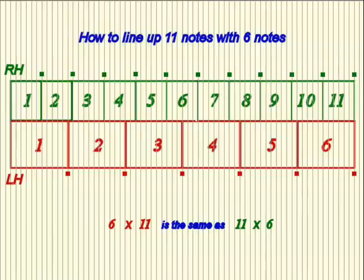For 22 versus 6, we'll have 22 green boxes on top of the same 6 red boxes.